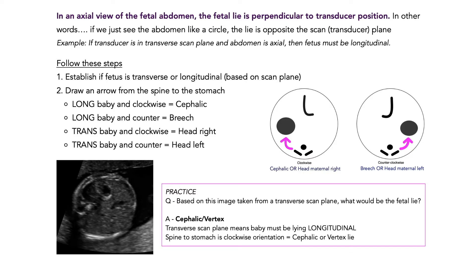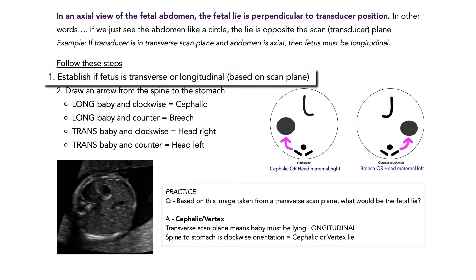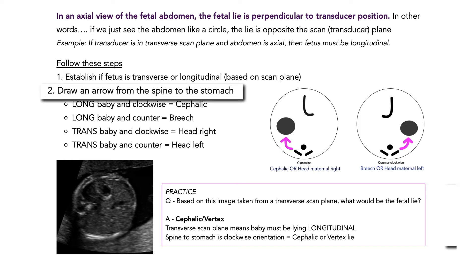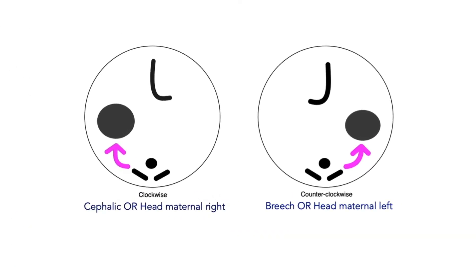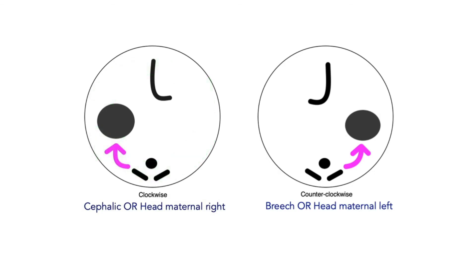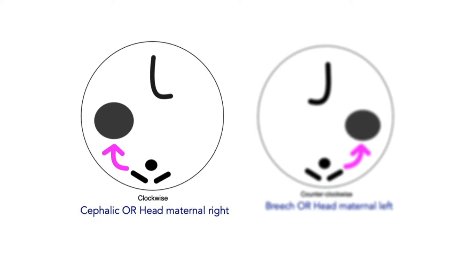Let's look at our next step. Step one is establishing the fetal lie based on the scan plane. Step two is to identify the spine and the stomach, and visualize or draw an arrow from the spine to the stomach in the closest direction, noting whether it goes clockwise or counterclockwise. If it goes clockwise and it's a longitudinal baby, it's cephalic. If the baby is transverse and it goes clockwise, the head is on maternal right. That means the abdominal view in a cephalic and a transverse head-right baby are exactly the same — which highlights the importance of first establishing how the baby is lying relative to the mom.